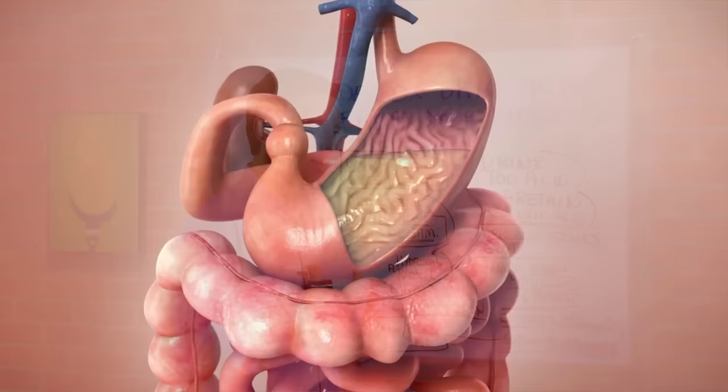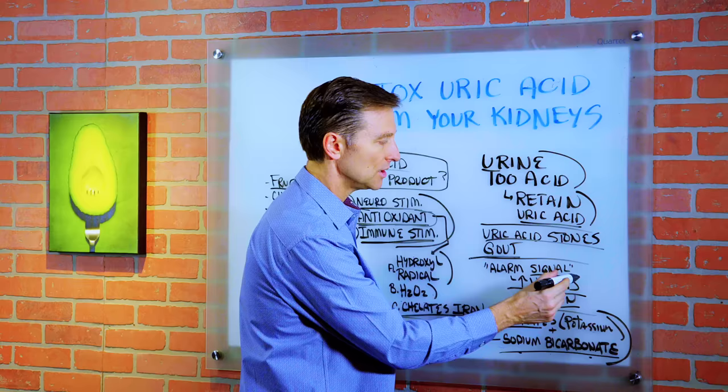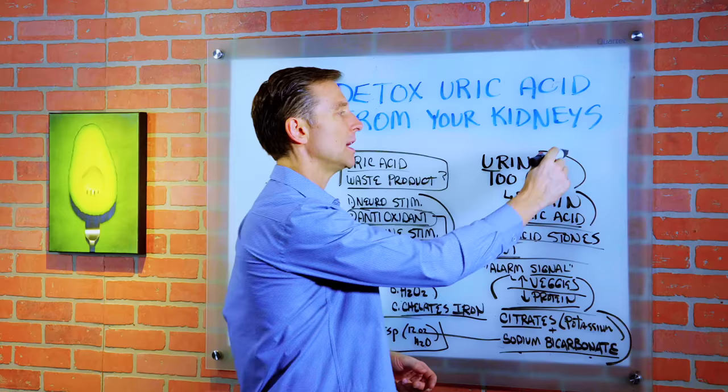So to recap, these two remedies are more for symptomatic relief. Ultimately, you just need to increase your vegetables, decrease your protein to correct this imbalance, so that way your pH can be correct.